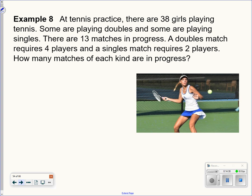Word problem. Word problems can be a little bit more complicated. You're going to have to make the equations up yourself. At tennis practice, there are 38 girls playing tennis. Some are playing doubles, and some are playing singles. There are 13 matches in progress. A doubles match requires 4 people. A singles match requires 2 people. How many matches of each kind are in progress?